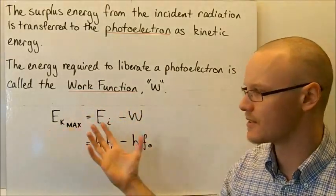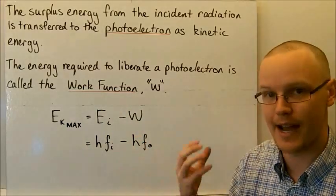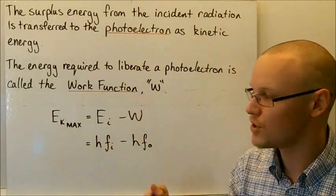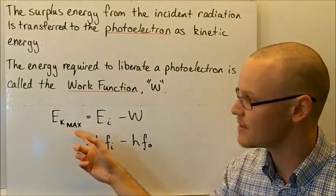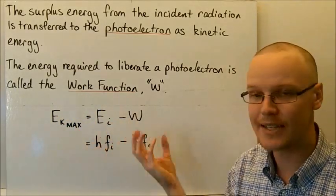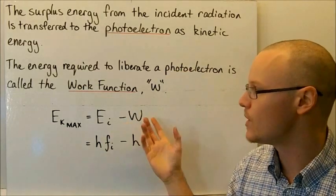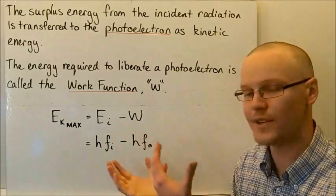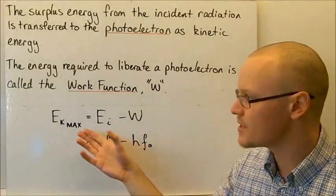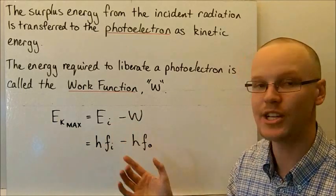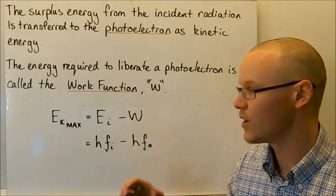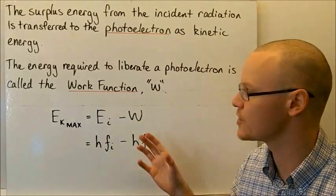Here we can see the algebraic way of stating that the surplus energy goes to the kinetic energy of the electron. The maximum kinetic energy of the electron is equal to the energy of the incident radiation minus the work function — it's the energy left over from the interaction of the incident radiation with the work function of the metal.